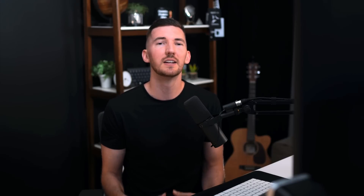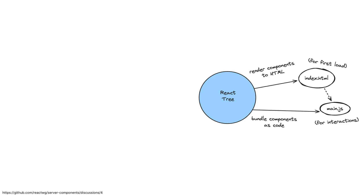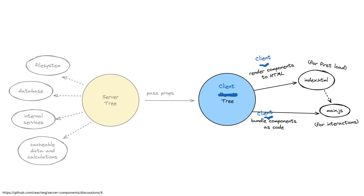In case you haven't read up on them very much yet, server components can be useful for fetching data from your database or from a remote location, and then sending some HTML back from the server. And client components are all of the React that you know and love today — or the Next.js Pages router that you know and love today. All of the libraries, packages, and the entire React ecosystem continues to work as-is inside of the client components world.